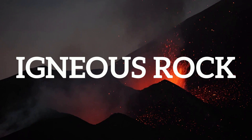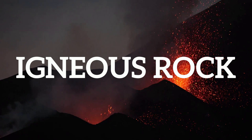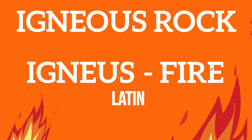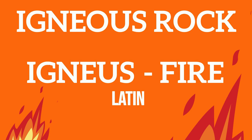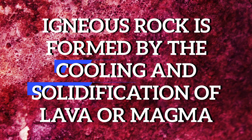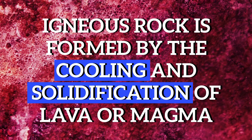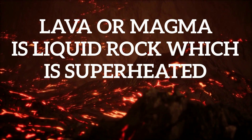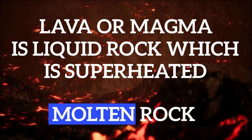Get ready for lots of additional vocabulary in this video. After the lesson, stay tuned for an extensive glossary on all the highlighted words. Our first category of rock is igneous rock. This word is a little tricky for English beginners. Igneous comes from 'ignus', which is the Latin for fire. Igneous rock is formed by the cooling and solidification of lava or magma.